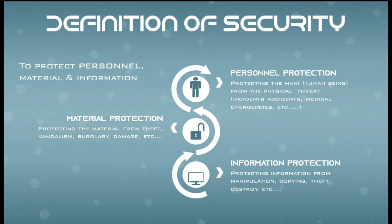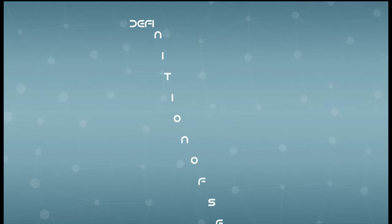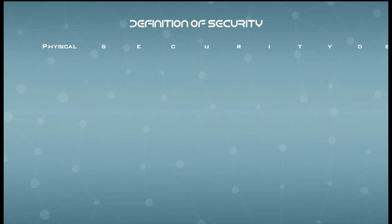Personal protection means protecting human beings from physical threats like incidents, accidents, medical emergencies, etc. Material protection means protecting material from theft, vandalism, burglary, damage, etc. Information protection means protecting information from manipulation, copying, theft, destruction, etc. All these harms to man, material, and information can be overcome through security procedures.